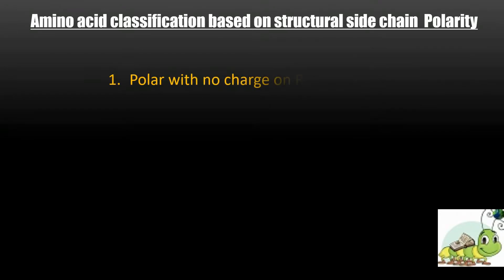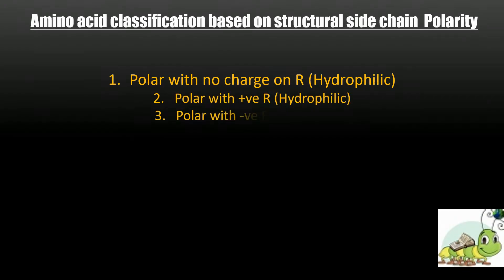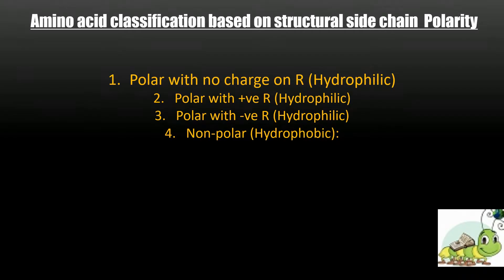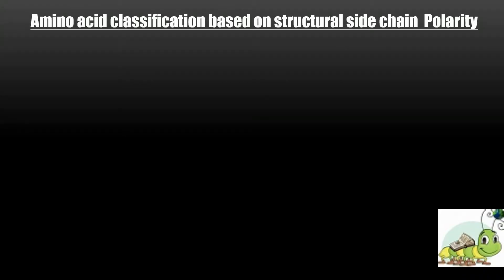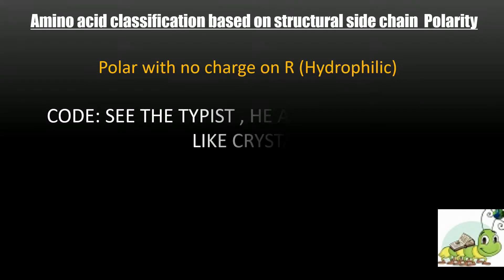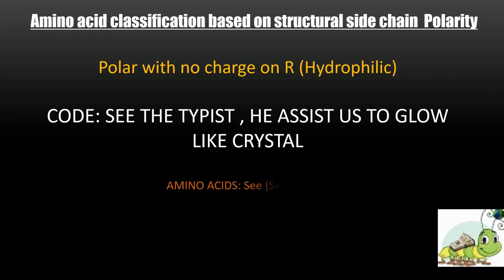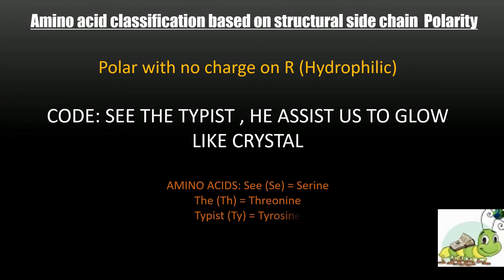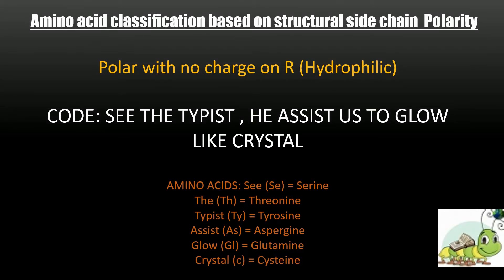Another structure-based classification is based on sidechain polarity. If you remember the previously stated 20 words, that can help you in this classification too. The classification has 4 types: 1) Polar with no charge on R (hydrophilic), 2) Polar with positive R (hydrophilic), 3) Polar with negative R (hydrophilic), 4) Nonpolar (hydrophobic). For polar with no charge on R, remember: 'See the typist — he assists us to glow like crystal' — meaning Serine, Threonine, Tyrosine, Asparagine, Glutamine, Cysteine.